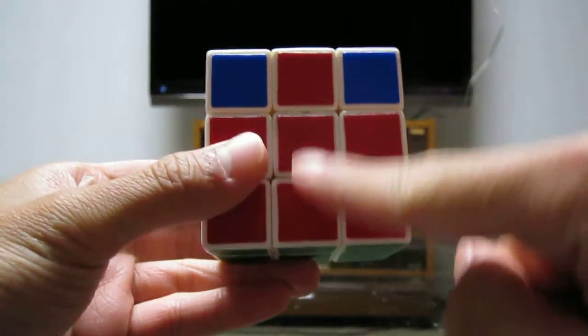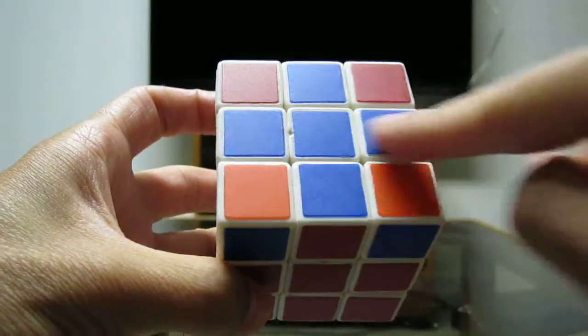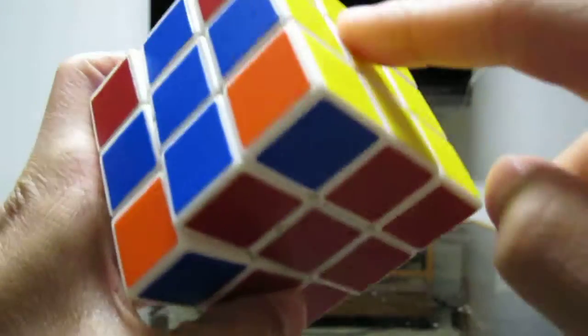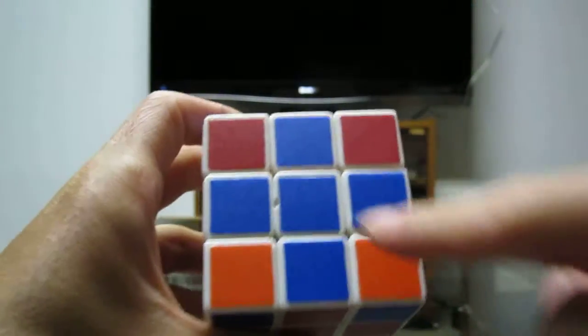Ok, so you have the first two layers, the cross, and each cross piece is in its correct spot. Now, what's left are the corners.